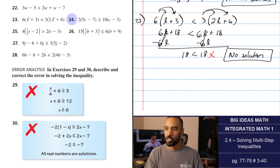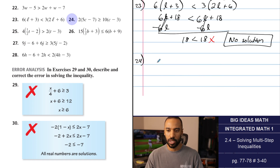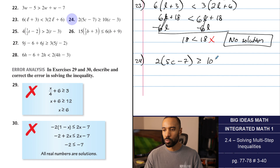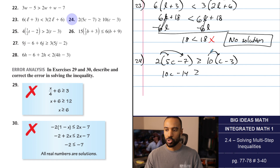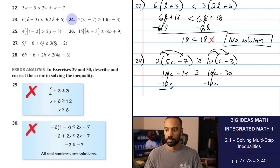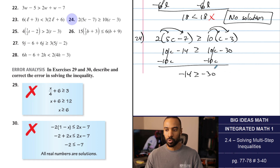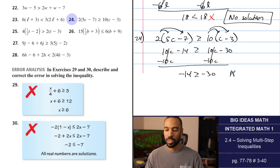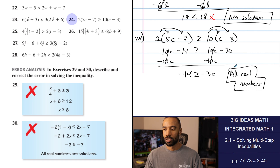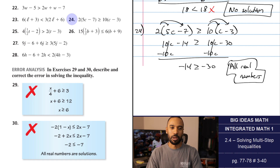Number 24: distributing gives 10C minus 14 on the left and 10C minus 30 on the right. The 10C terms subtract and eliminate. You get negative 14 is greater than or equal to negative 30 — that's a true statement. This is all real numbers.